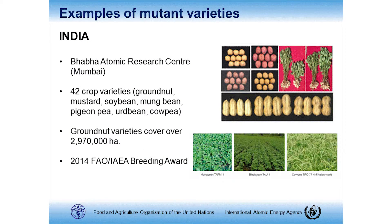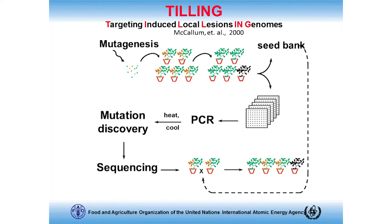I will talk about several different crops. I'll be giving some data on sorghum, some data on banana — a vegetatively propagated species, which is something we're quite interested in — and also some recent data on TILLING by sequencing in tomato.